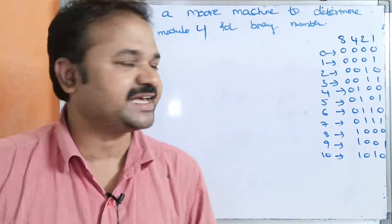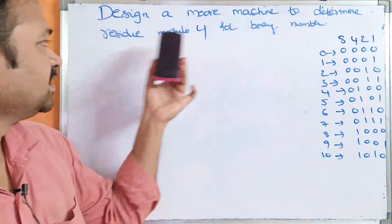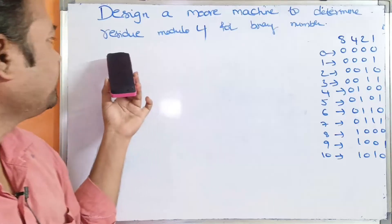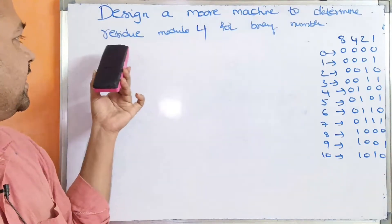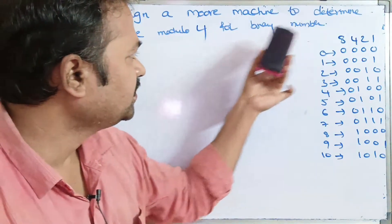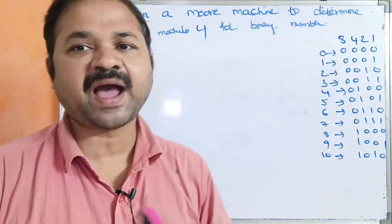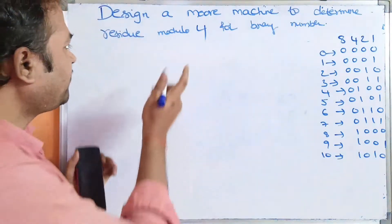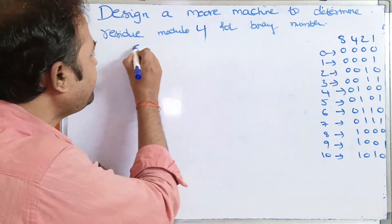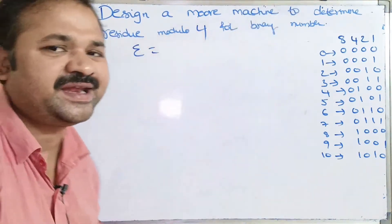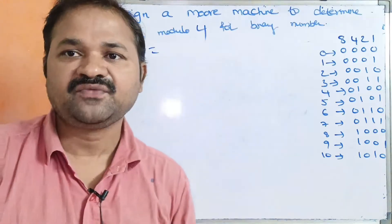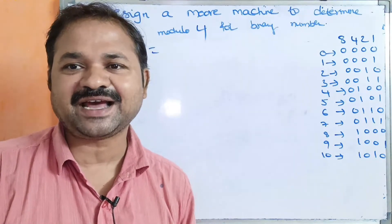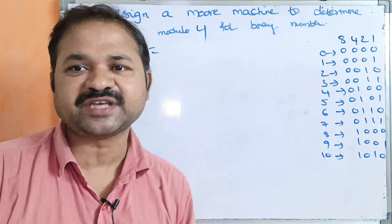Now let us see this example: design a Moore machine to determine residue modulo 4 for a binary number. The input alphabet sigma is equal to the binary alphabet, since a binary number is a collection of zeros and ones.